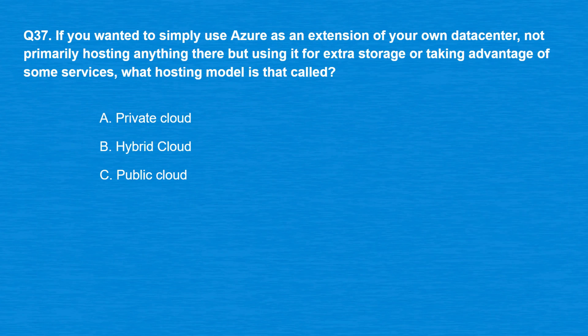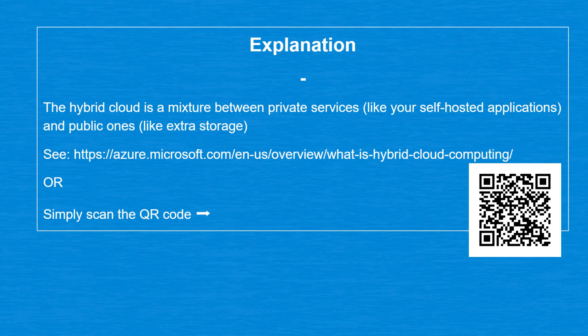Question 37: If you wanted to use Azure simply as an extension of your own data center — not primarily hosting anything there, but using it for extra storage or some services — what hosting model is that called? Option A: Private cloud. Option B: Hybrid cloud. Option C: Public cloud. The correct answer is Option B, Hybrid cloud. The hybrid cloud is a mixture between private services like self-hosted applications and public ones like extra storage.